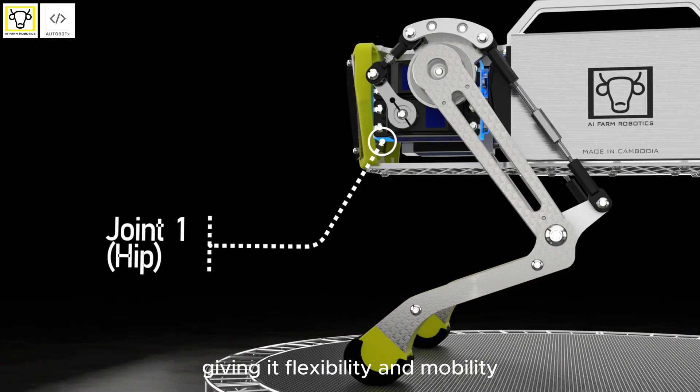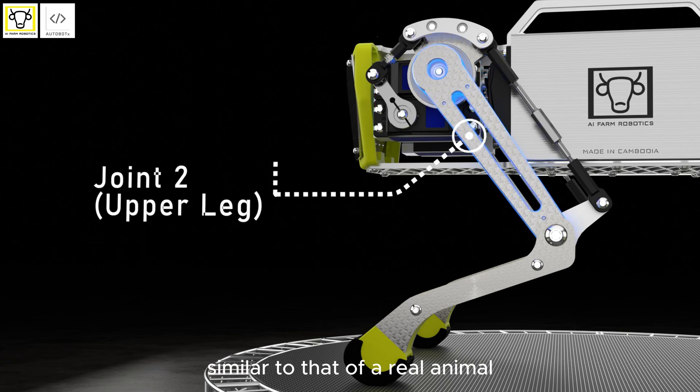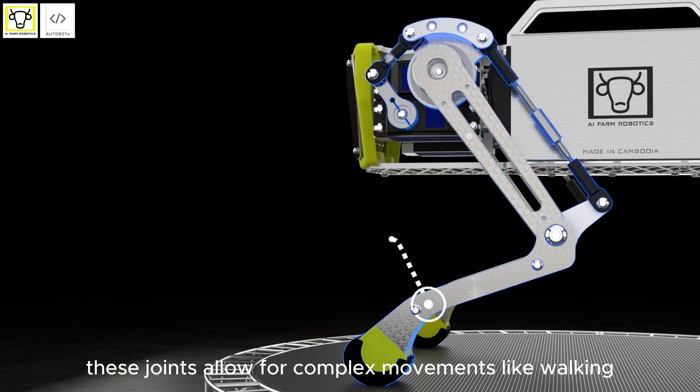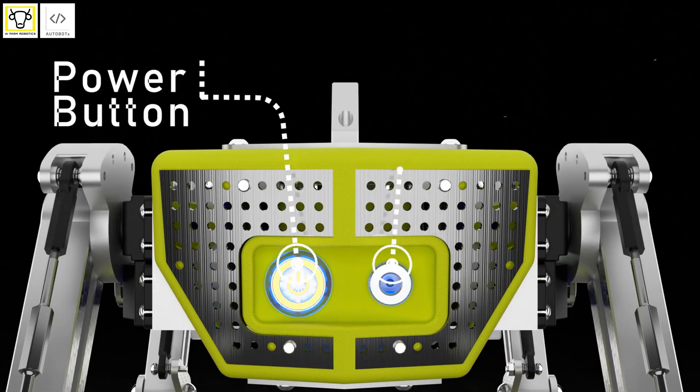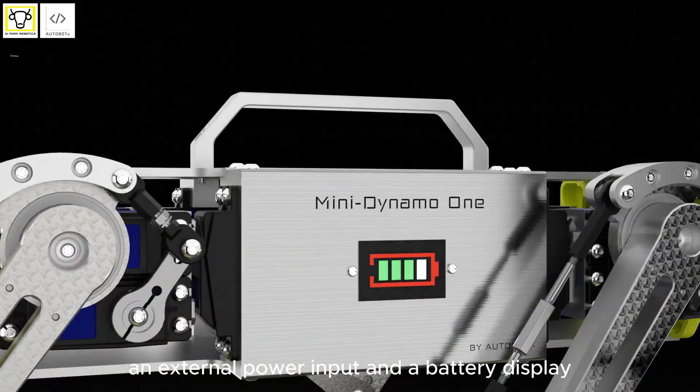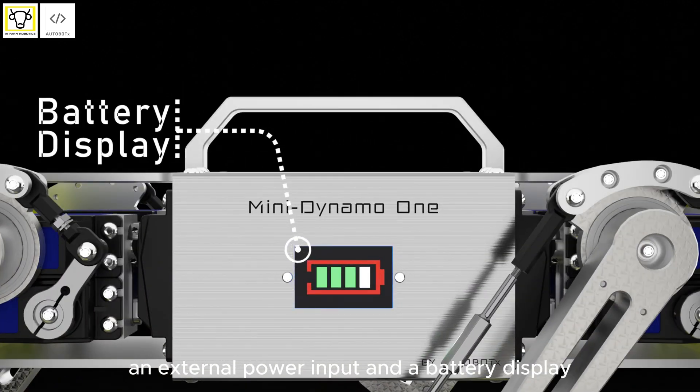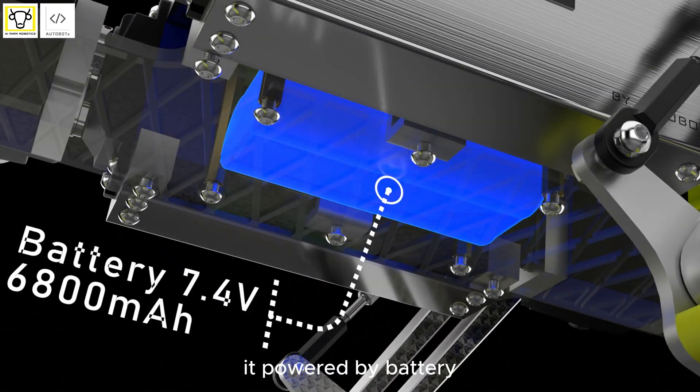Giving it flexibility and mobility similar to that of a real animal, these joints allow for complex movements like walking, turning, and crouching. At the back there's a power button, an external power input, and a battery display. It's powered by battery.